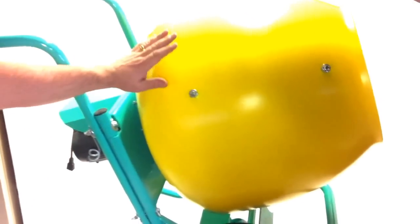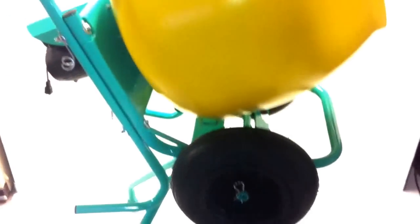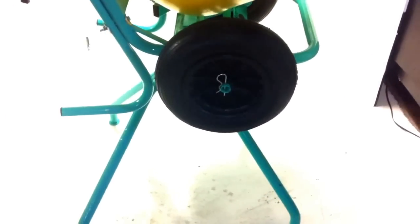This is the Amir Wheelman. It's the 110-volt version which lets you use a poly drum, and it's on the optional stand kit that they have for it so you can use it to dump into wheelbarrows.